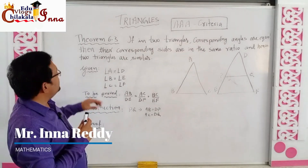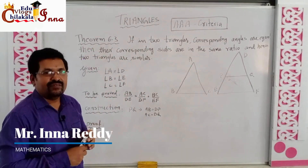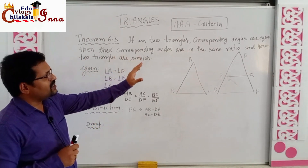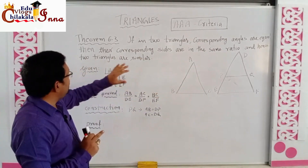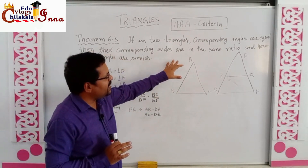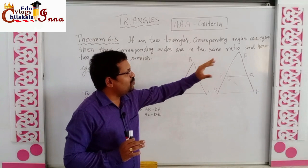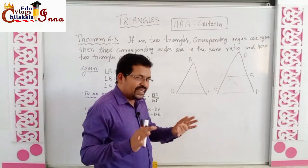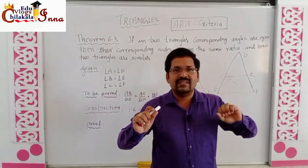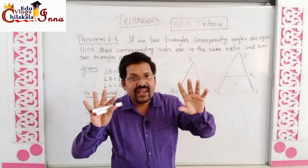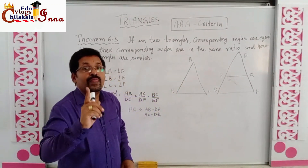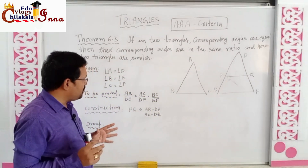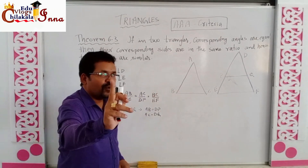We are studying theorem 6.3 from 10th class triangles. The statement is: if in two triangles the corresponding angles are equal, then their corresponding sides are in the same ratio, and hence the two triangles are similar. That means if a pair of triangles has equal angles, their sides will be proportional — and that is what we shall prove.